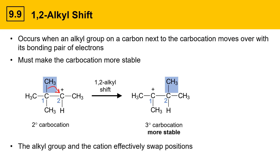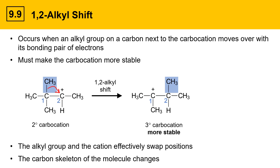The alkyl group and the cation have effectively swapped positions in this reaction, and in addition, this reaction has caused the molecule to undergo a carbon skeleton change. So when 1,2-alkyl shifts happen, you'll notice the carbon skeleton in the product looks different than in the starting material. That's a key indicator that a 1,2-alkyl shift has happened.